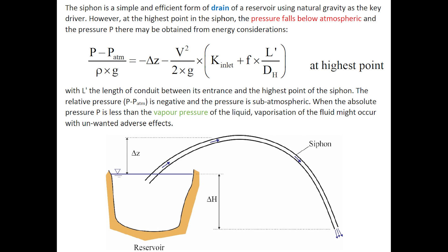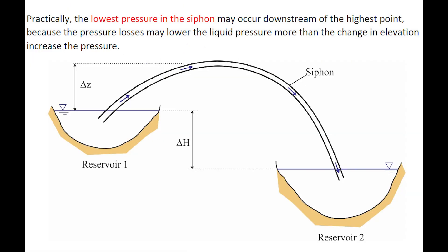The siphon is a simple and efficient form of drain to drain a reservoir by natural gravity. At the highest point in the siphon, the pressure falls below atmospheric. The pressure p at this highest point may be obtained from energy considerations, in which delta z is the elevation of that location above the upper reservoir, and On L' is the length of the conduit from the upper reservoir to the highest point. Practically, the lowest pressure in the siphon may occur downstream of the highest point, because the pressure losses may lower the liquid pressure more than the change in elevation increases the pressure.